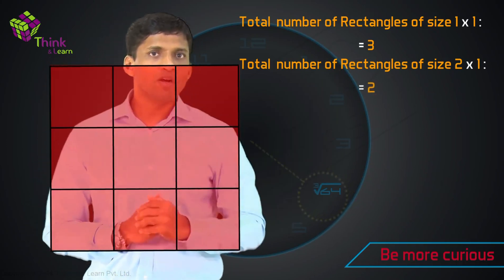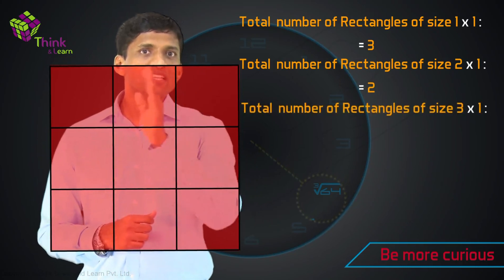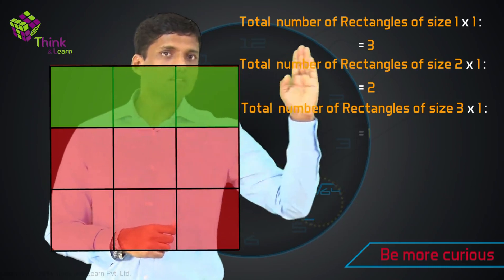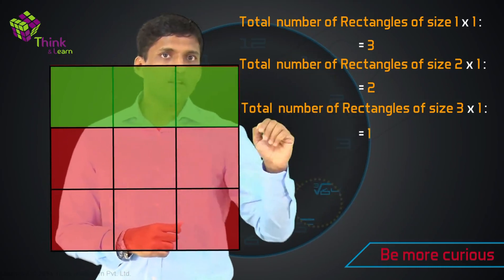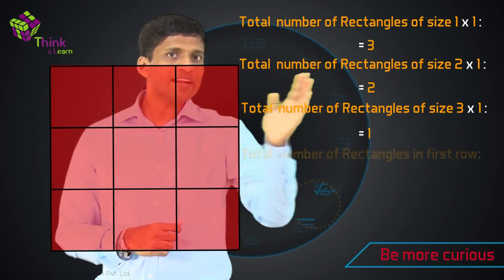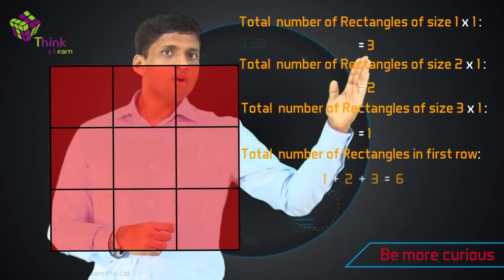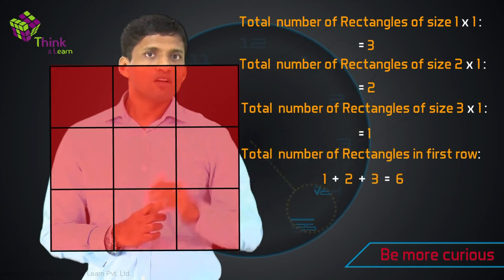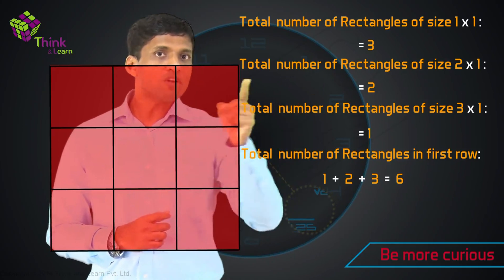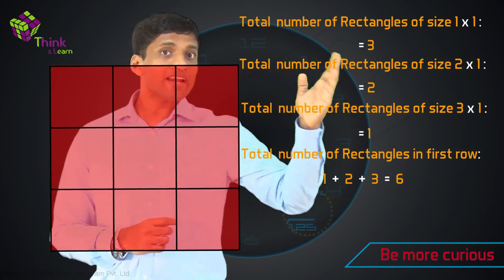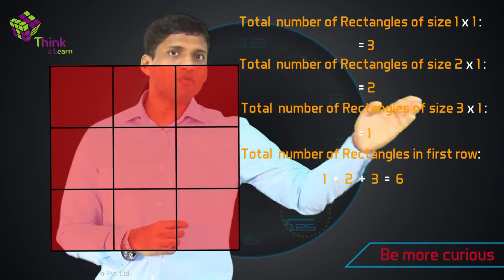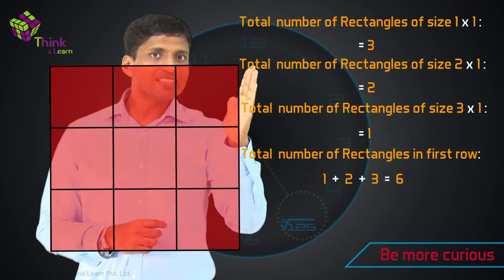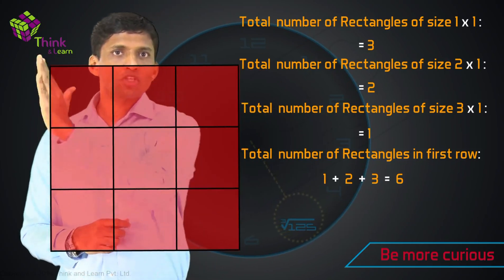How many rectangles are there of size 3 by 1? It's just 1 — the complete row. So there is a clear pattern: how many rectangles are in this particular row? It's 1 plus 2 plus 3, which equals 6. We know that when we add numbers like this we get triangular numbers. So there are 6 rectangles along the first row.